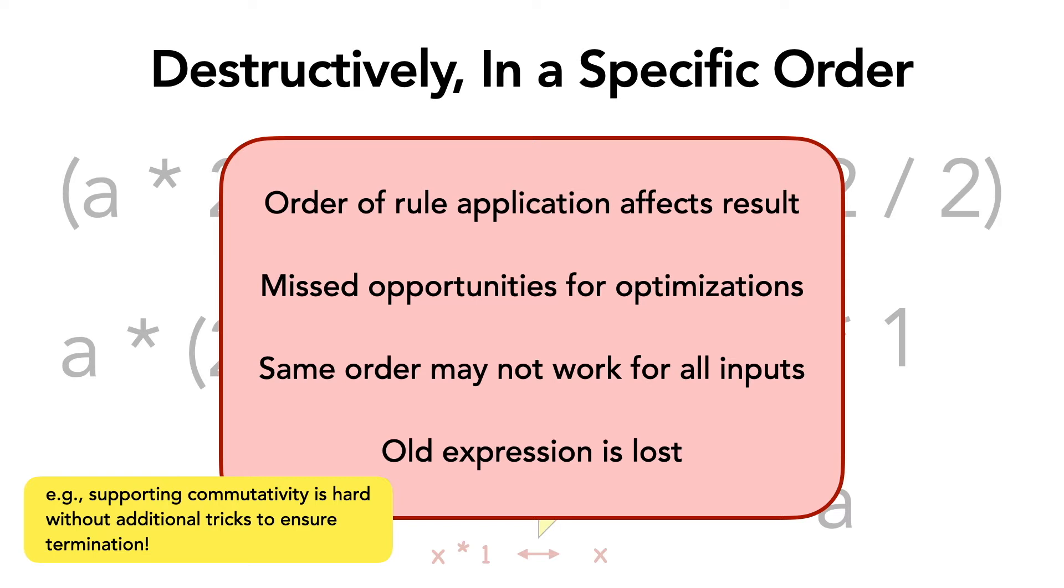This is a problem with applying rewrite rules in a specific order. Another issue is that the older terms are no longer preserved, so in the future some optimizations may become impossible. And finally, such an approach for rewriting also makes it hard to have support for some rules, for example commutativity, without adding some extra tricks that ensure termination.